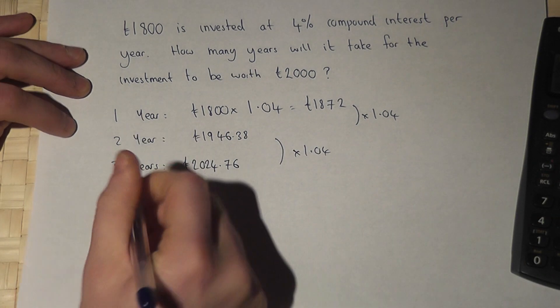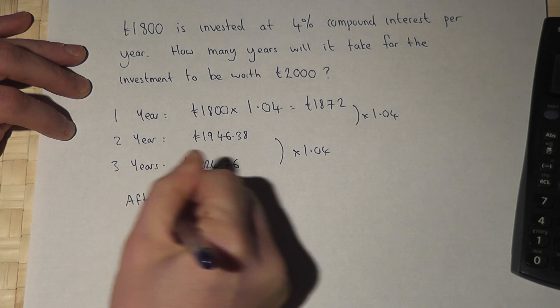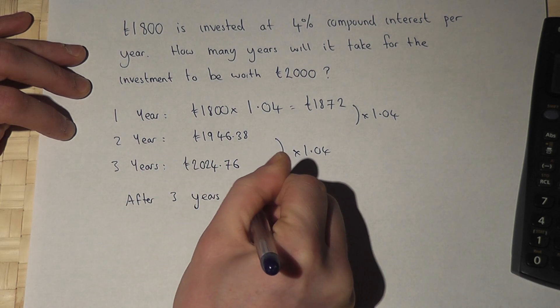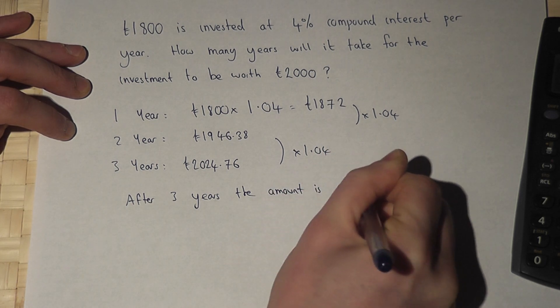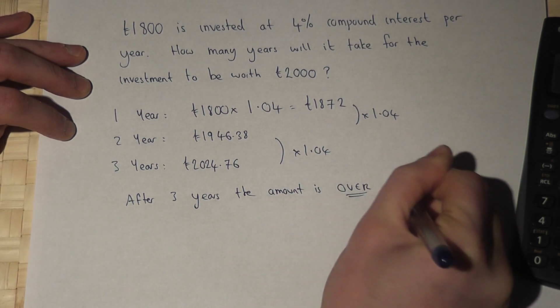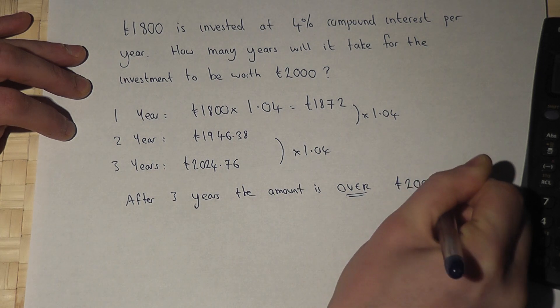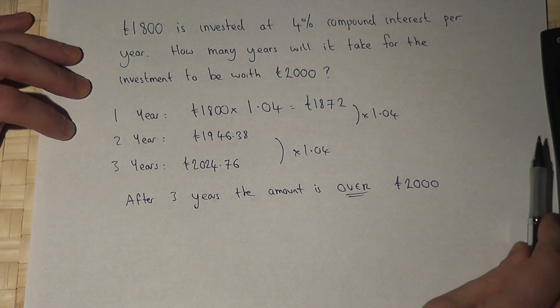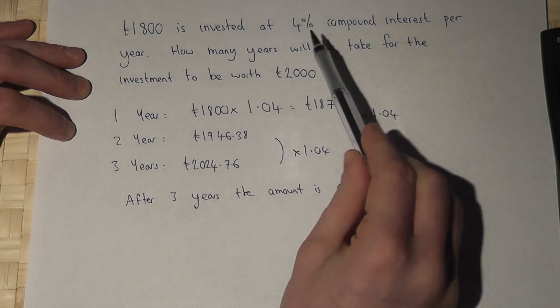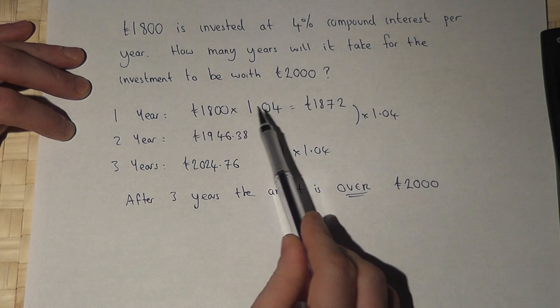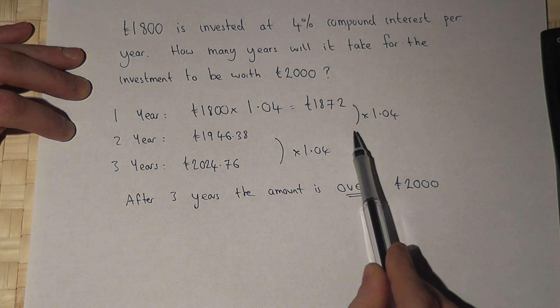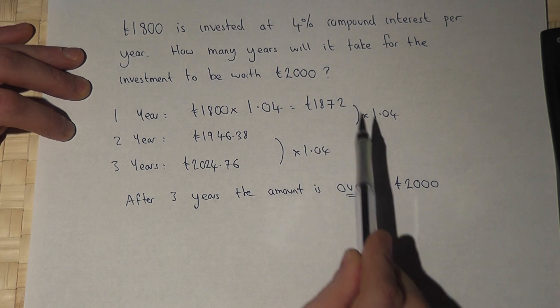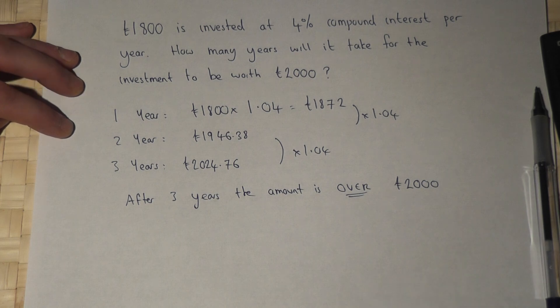So the answer is after three years the amount is over £2,000. To increase by 4%, we times by 1.04. We keep on repeating this process until the answer is over the given value of £2,000.